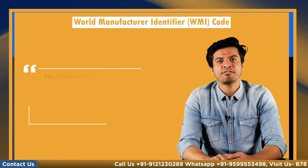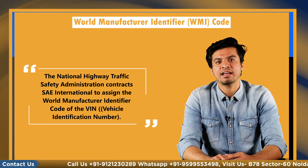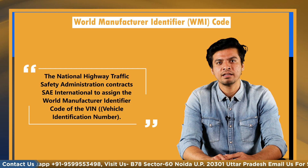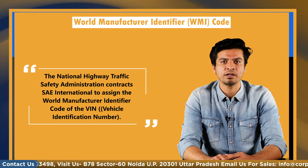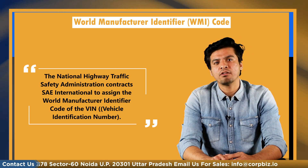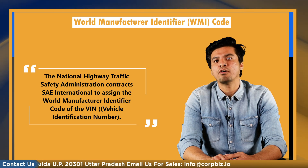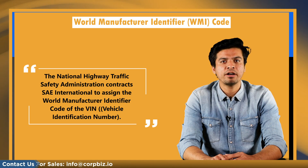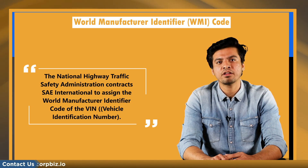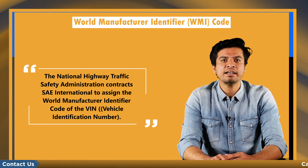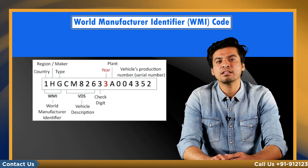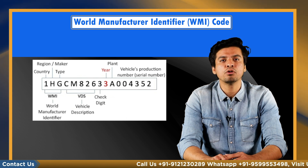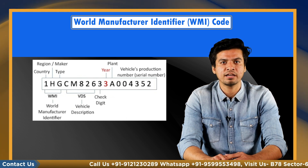The National Highway Traffic Safety Administration contracts SAE International to assign the World Manufacturer Identifier Code of the VIN, that is Vehicle Identification Number. The WMI is always the first three digits of a vehicle identification number. The first digit indicates the final point of vehicle assembly or the country of origin. The second digit tells the manufacturer and the location of production, and the third digit is combined with the first two digits to identify the manufacturing division or vehicle type.